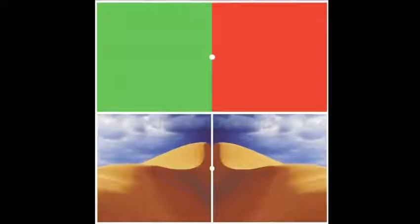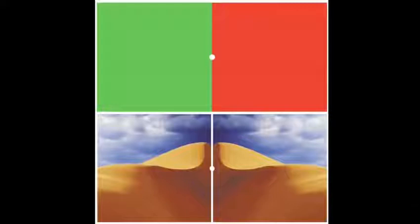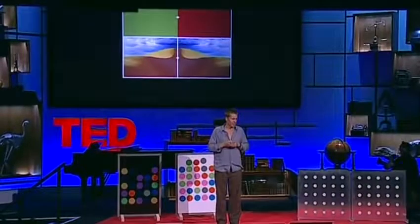Notice that those two desert scenes are physically the same — one is simply the flipping of the other. Now look at the dot between the green and the red and stare at that dot. Your brain is learning that the right side of its visual field is under red illumination, and the left side is under green illumination. Now look at the dot between the two desert scenes. They don't look the same anymore — because your brain is seeing that same information as if the right one is still under red light and the left one is still under green light. That's your new normal.